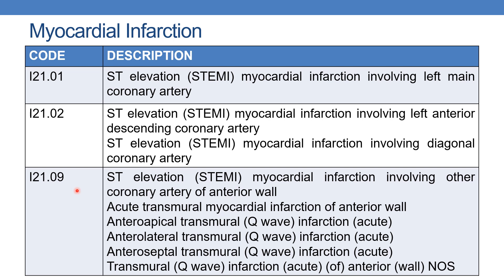The next is I21.09 — ST elevation myocardial infarction involving other coronary artery of anterior wall. Synonymous terms include: acute transmural myocardial infarction of anterior wall, anteroapical transmural infarction, anterolateral transmural infarction, anteroseptal transmural Q-wave infarction, and transmural infarction of anterior wall NOS. Whenever any of these terms appear in the medical record, you need to code I21.09.